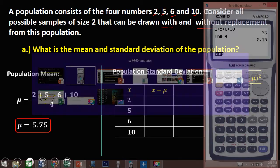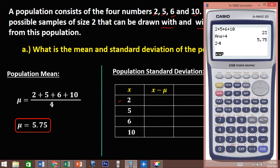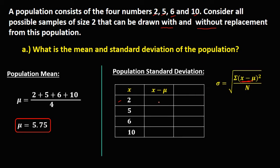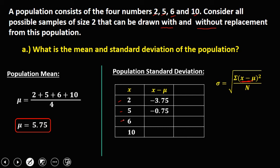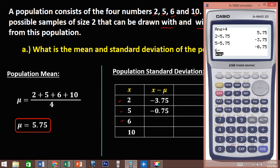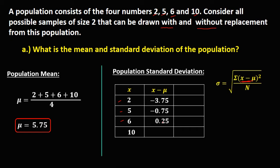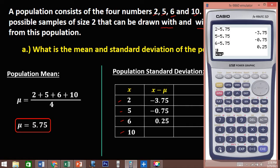For x = 2: 2 minus 5.75 equals negative 3.75. For x = 5: 5 minus 5.75 equals negative 0.75. For x = 6: 6 minus 5.75 equals 0.25. And for x = 10: 10 minus 5.75 equals 4.25.